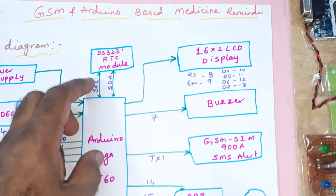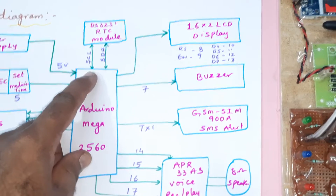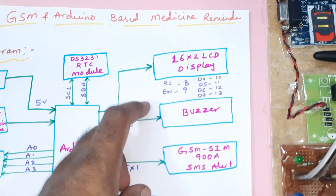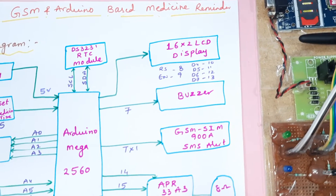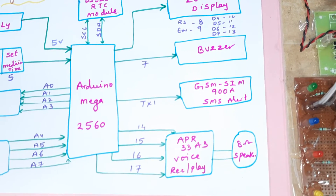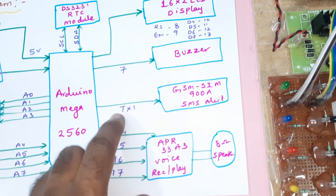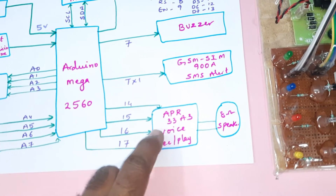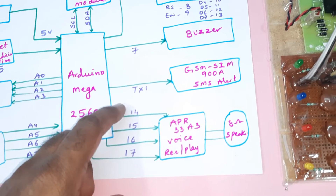5 volts power supply. The DS3231 RTC module is connected via I2C protocol using SCL and SDA. The 16x2 LCD display is connected with RS, enable, D4, D5, D6, D7 on pins 8, 9, 10, 11, 12, 13. The alarm is on pin 7. The GSM SIM800A module is connected via TX1 serial communication. The APR33A3 voice record and playback IC is connected with pins 14, 15.